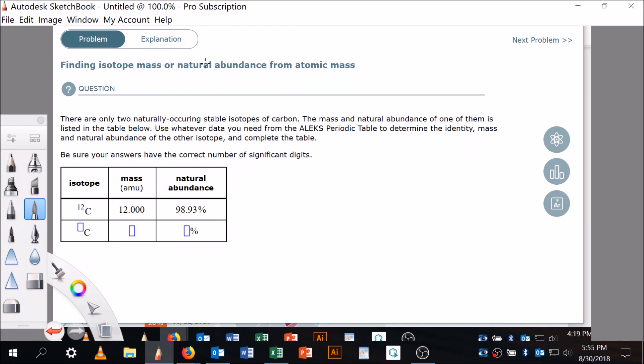Let's look at one I pulled up here on my whiteboard. Finding Isotope Mass or Natural Abundance from Atomic Mass. So there's two things I gotta do here. Number one, I have to know what's going on here. There are only two naturally occurring stable isotopes of carbon, and it gives us a table showing both of those: carbon-12 and carbon something else.